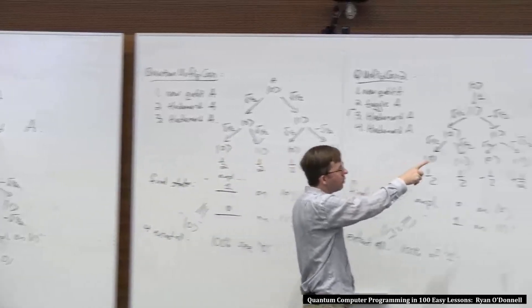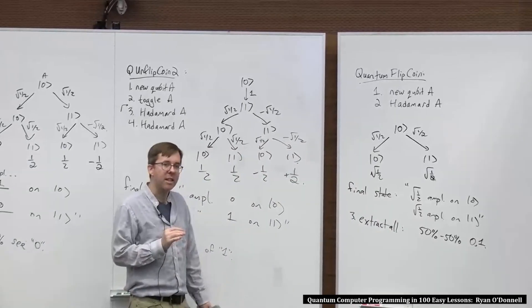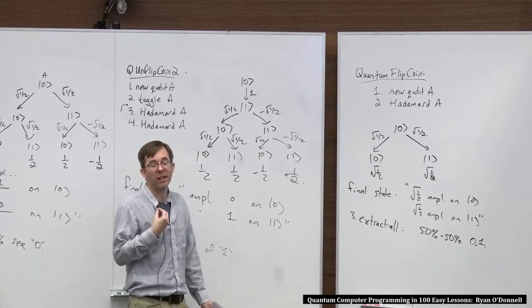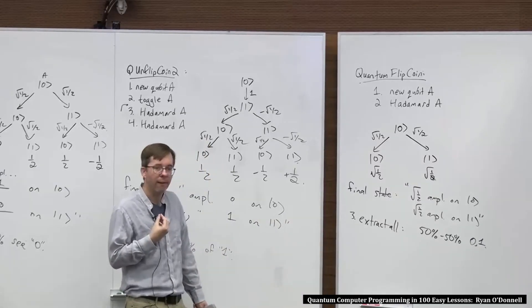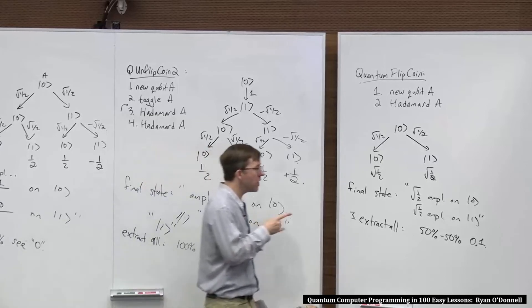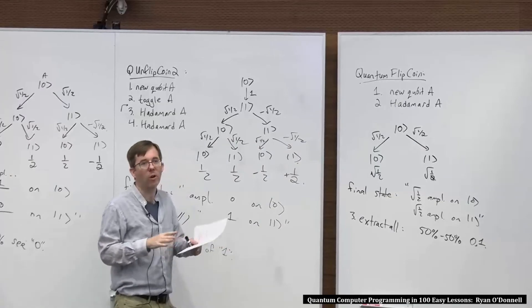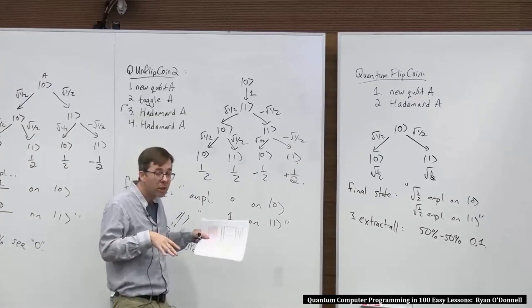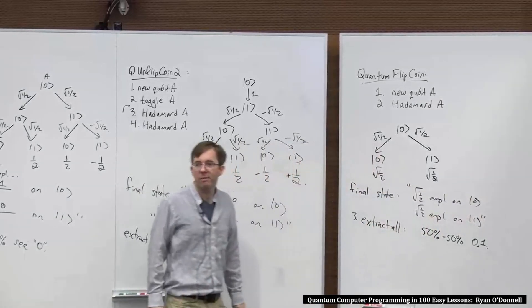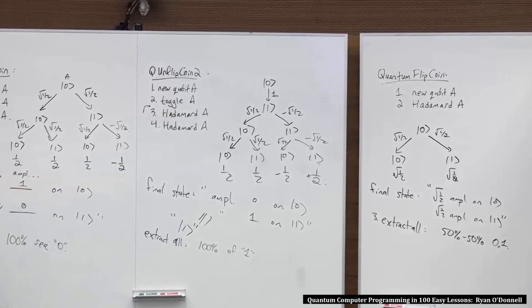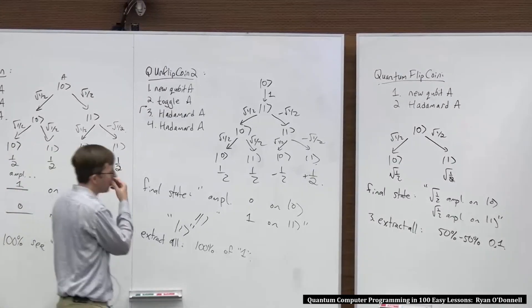But when you get out a qubit and you Hadamard it and get it to this state, it's not like it's secretly decided, this qubit is not like, I'm 0. If you measure me, I'm going to be 0. Or that's like, I've decided to be 1. If you measure me, I'm going to become 1. Its true state is this. This is its true genuine physical state. It doesn't involve our lack of knowledge of is it really 0 or is it really 1. This superposition is the actual physical state of it. And you just got to accept that.